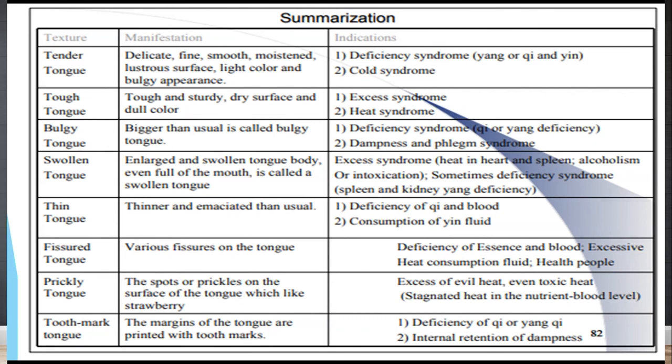To summarize: a tender tongue has a delicate, fine, smooth, moist, and lustrous surface with light color and bulgy appearance, indicating deficiency syndrome — yang, yin, or qi deficiency — and is also associated with cold syndrome. A tough tongue has a dirty, dull surface indicating excess syndrome associated with heat. A bulgy tongue indicates deficiency syndrome; a swollen tongue indicates excess syndrome with heat involving the heart and spleen. A thin tongue indicates qi and blood deficiency with consumption of yin fluid.